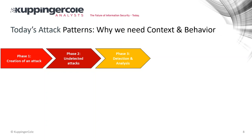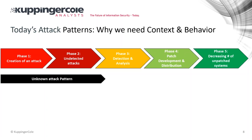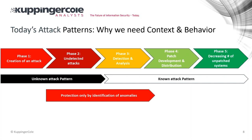At some point someone detects a new attack vector, it gets analyzed, a patch is created, developed, and distributed — and we have a decreasing number of unpatched systems, which usually takes quite a while. With Heartbleed, roughly 50 percent of servers weren't patched one year after the patch became available. So we have unknown attack patterns, things happening, and we can only protect against attacks where we have a patch deployed.